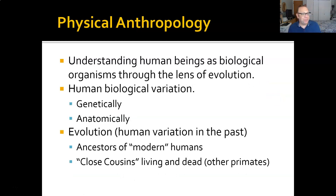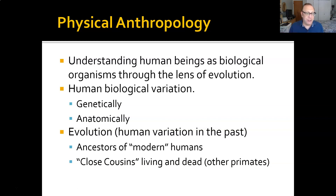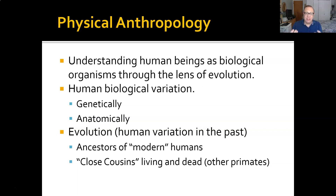Finally, physical anthropology uses the lens of biology and evolution. We look at human beings as biological organisms in the context of evolution. We look at human biological variation genetically, anatomically, physiologically, and ecologically. We look at that in the context of evolution, both in terms of ancient human ancestors and our living close cousins, which are the other primates. We study both to learn more about humans.